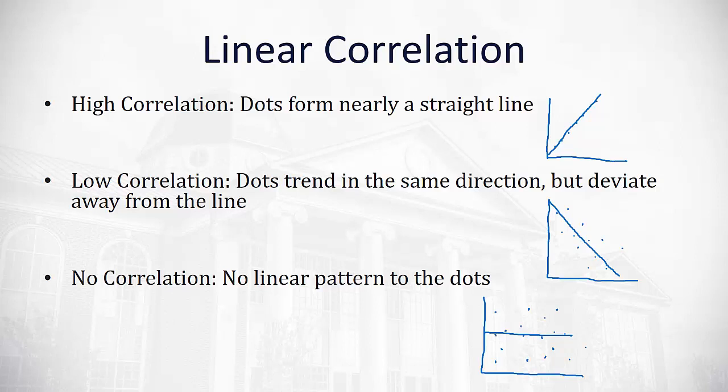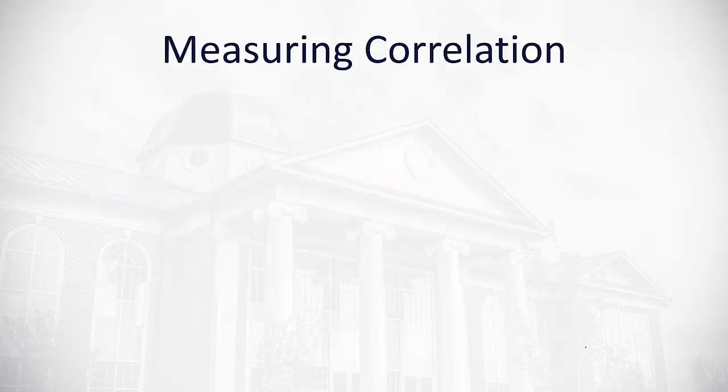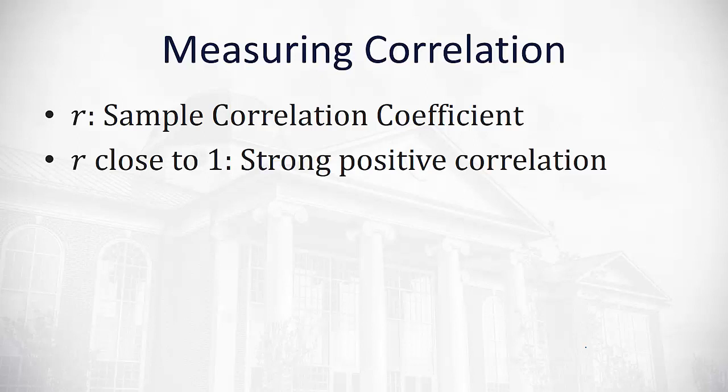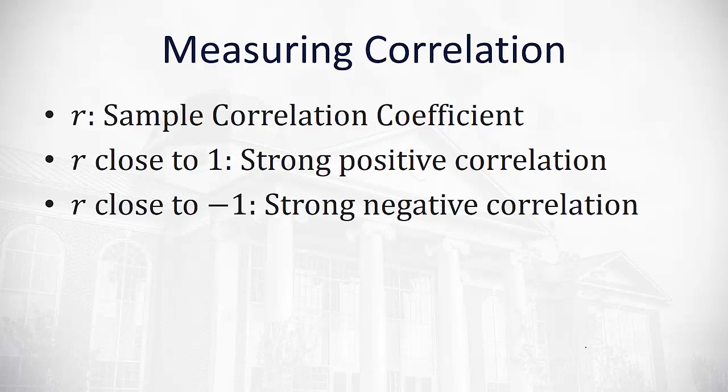So, if that's the idea behind correlation, how do we measure it? Measuring correlation is done with a statistic we call r, or the sample correlation coefficient. Whenever r is close to positive 1, we say it has a very strong positive correlation. The closer to 1, the stronger it is.